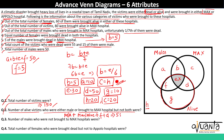Third question: number of males who were not brought to Max hospital. We exclude the set of Max hospital. Males not in Max hospital are represented by A plus F. A equals 10 and F equals 5, so A plus F equals 15. So 15 is the correct answer.